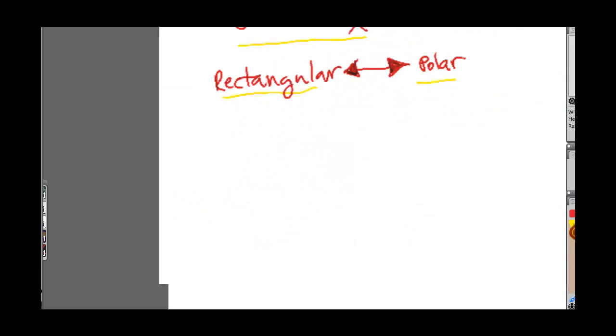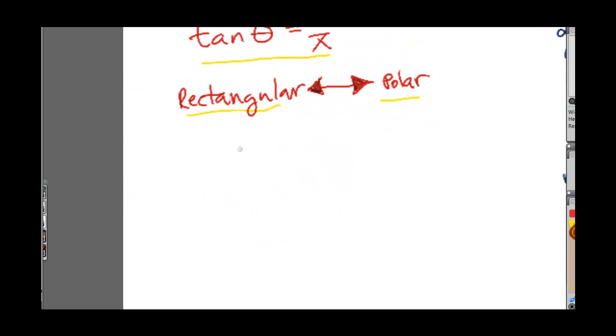So what you could do for these is you could just go through all of these and you could do a theta and r table. Actually, let me do it the other way because theta dictates what r is going to be. But that's going to be a really difficult process because you're just going to be shooting in the dark and you'd have to pick so many angles for you to actually get a clear cut picture.